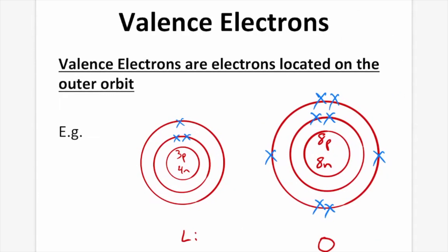Valence electrons are electrons located on the outer orbit. In this example, our valence electrons are shown on oxygen. So oxygen has two valence electrons, and lithium only has one, because we only have one outer electron.